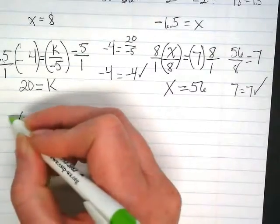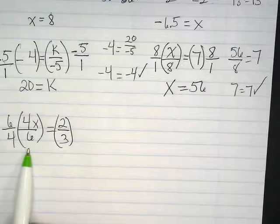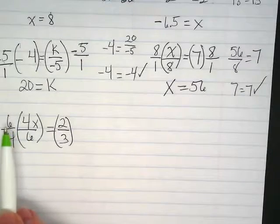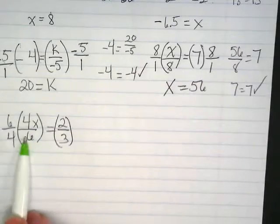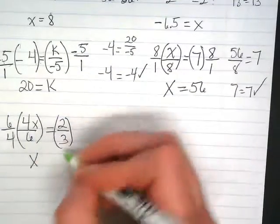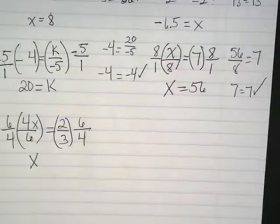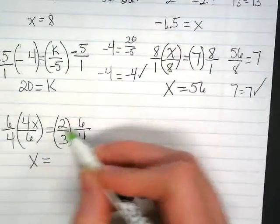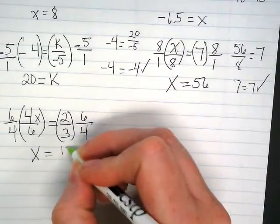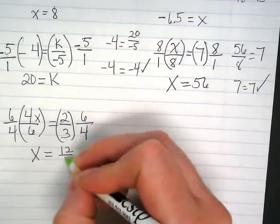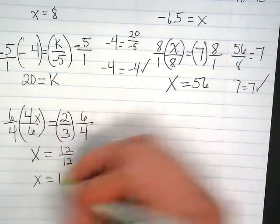Reciprocal means flip it or the reverse of it, so that when I multiply, I cancel everything out and get left with a 1. 6 times 4 is the same as 4 times 6, so they just become x. And on this side, 6 times 2 is 12, 3 times 4 is also 12, so this x is equal to 1.